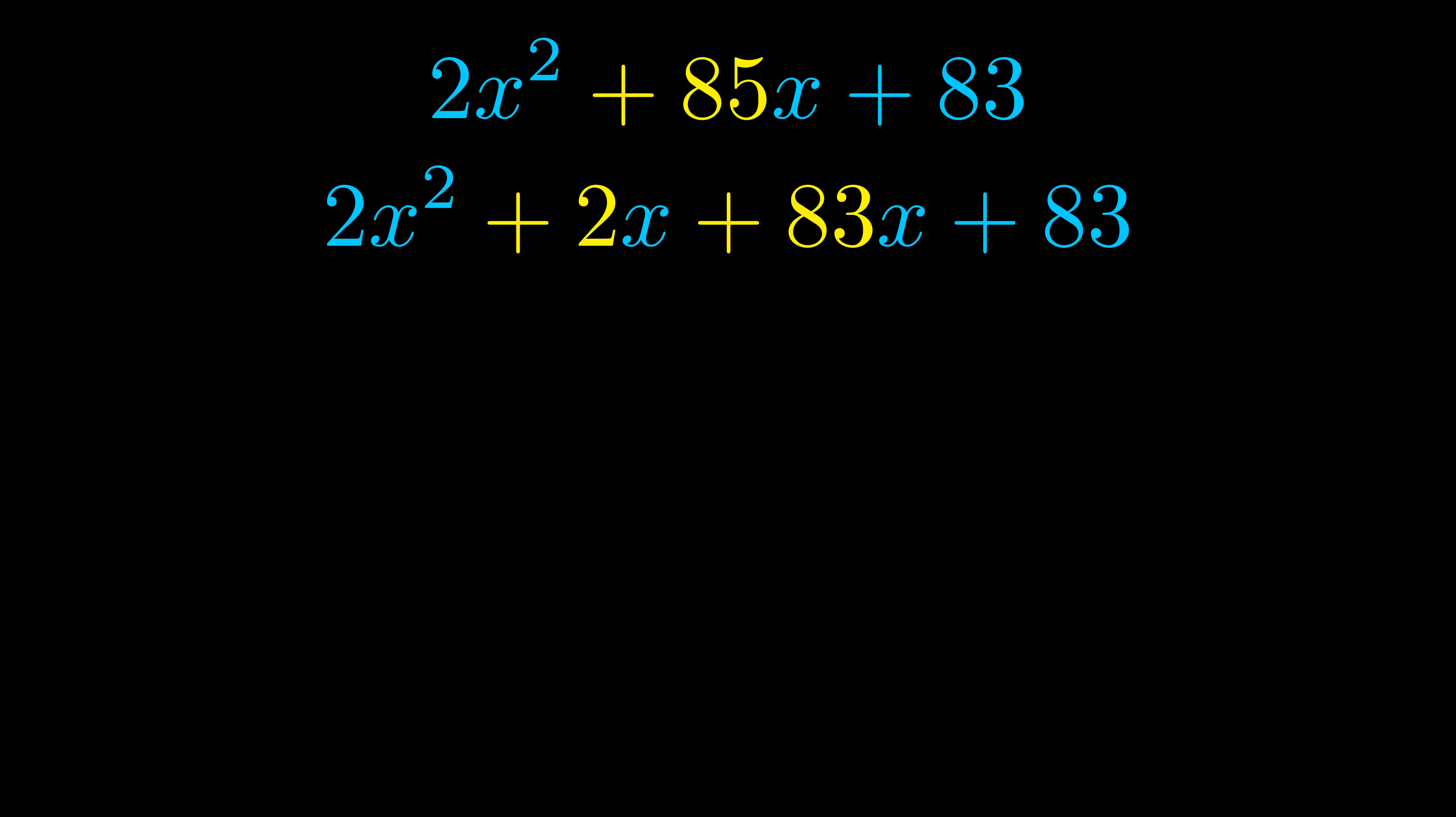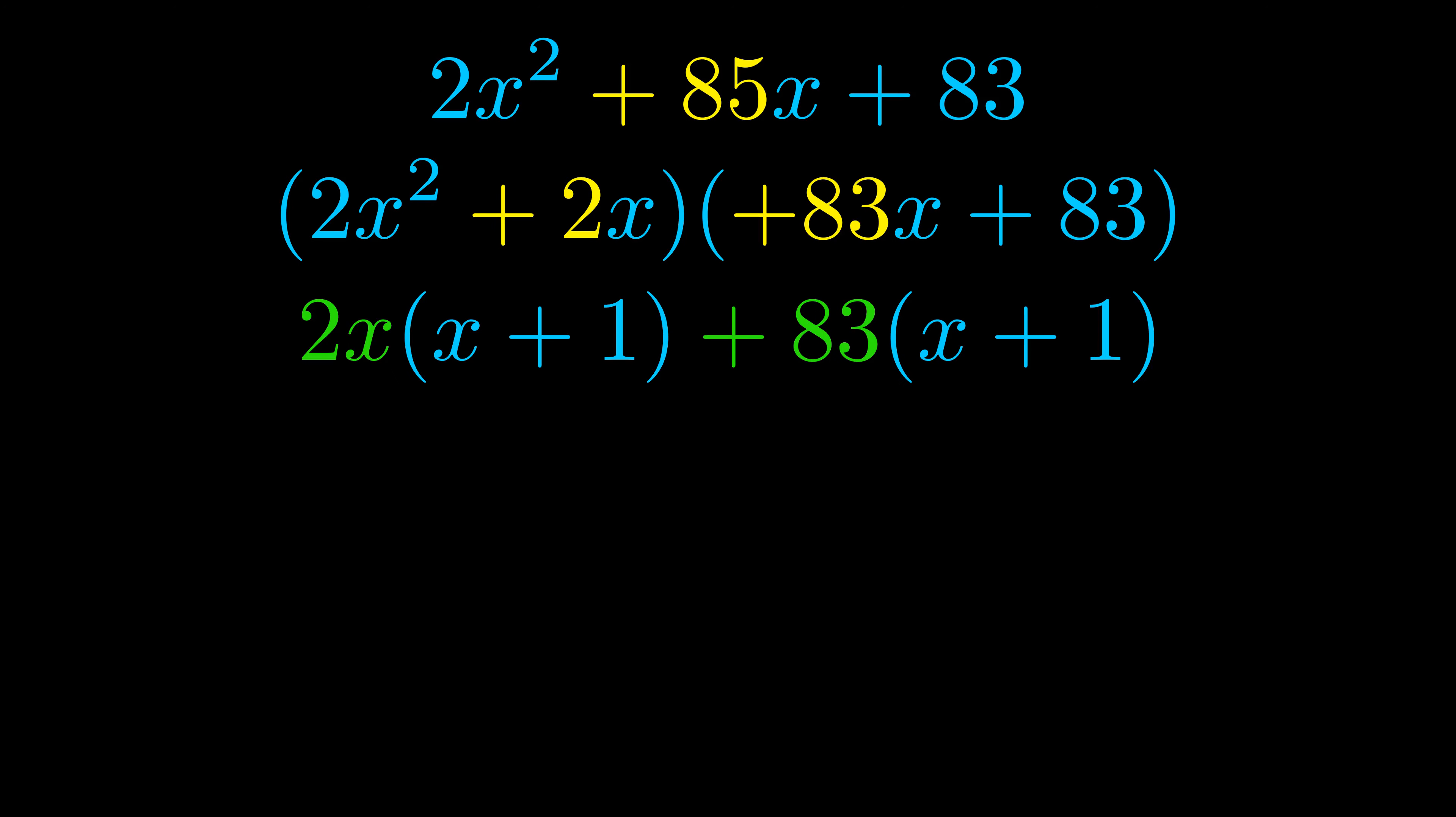Once we've done this we go ahead and we put parentheses around the first term and the last term. And we do that so that we can take the greatest common factor out of both terms. We can see the greatest common factor is now outside in green. Notice also how what remains inside of the parentheses is the same in both cases.